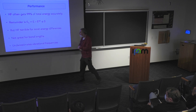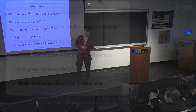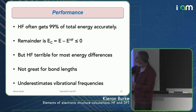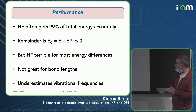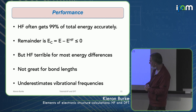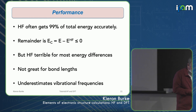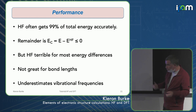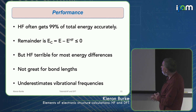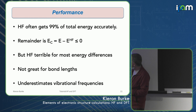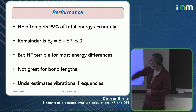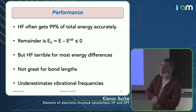An important thing to understand is that Hartree-Fock is terrible for most energy differences. Hartree-Fock underbinds most molecules by a vast amount. It's not great for bond lengths, and it substantially underestimates vibrational frequencies. How can it get 99% of the total energy and still be terrible? Because the electronic energy is huge — for something like Na2 it's probably about 150 Hartrees, and the bond energy would be on the order of one electron volt. So the bond energy is a tiny fraction of the total energy, and half of that contribution might be the correlation energy. Only energy differences matter.